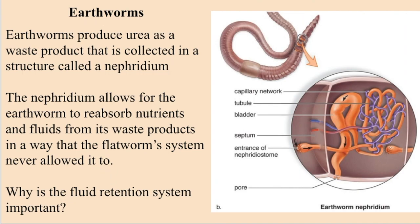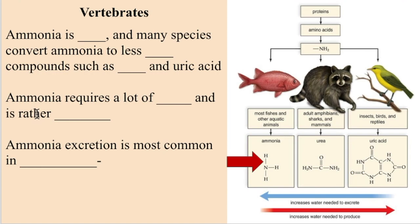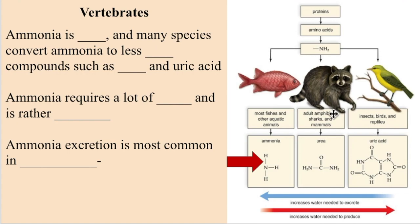Now onto vertebrates. Vertebrates excrete one of three waste products depending on their location and niche: ammonia, urea, and uric acid. As noted on the figure to the right, most fish and aquatic animals excrete ammonia. Adult amphibians, sharks, and mammals excrete urea, and insects, birds, and reptiles excrete a substance called uric acid.